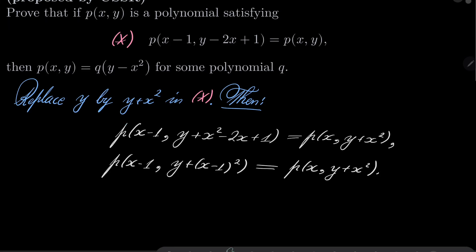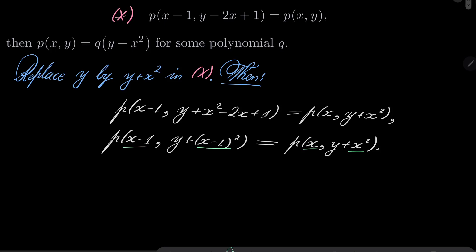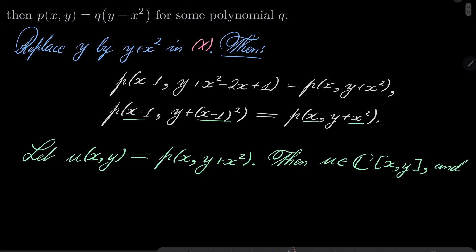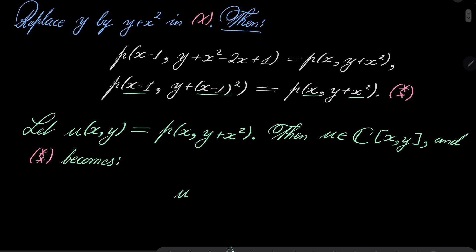We see that both sides are a bit similar — here we have x and x squared, here we have x minus 1 and (x minus 1) squared. This suggests that we should consider the following: let u of (x, y) be p of (x, y plus x squared). Notice that first of all u is again a polynomial in two variables, and moreover our functional equation — double asterisk — becomes the following: u of (x minus 1, y) equals u of (x, y).